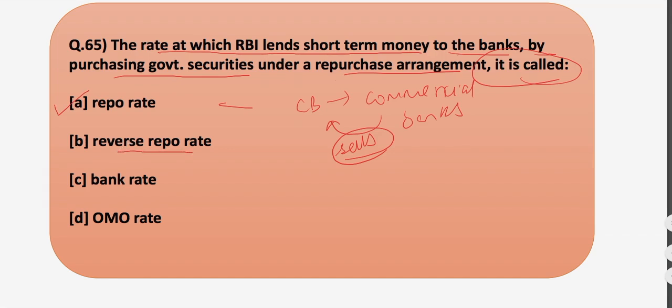Now discussing further, what is reverse repo rate? When the commercial bank lends money to the central bank. The bank rate is a rate of interest which a central bank charges on the loans and advances to a commercial bank without selling or buying any security. What is open market operations? It consists of buying or selling of government securities to influence the money supply in the economy.